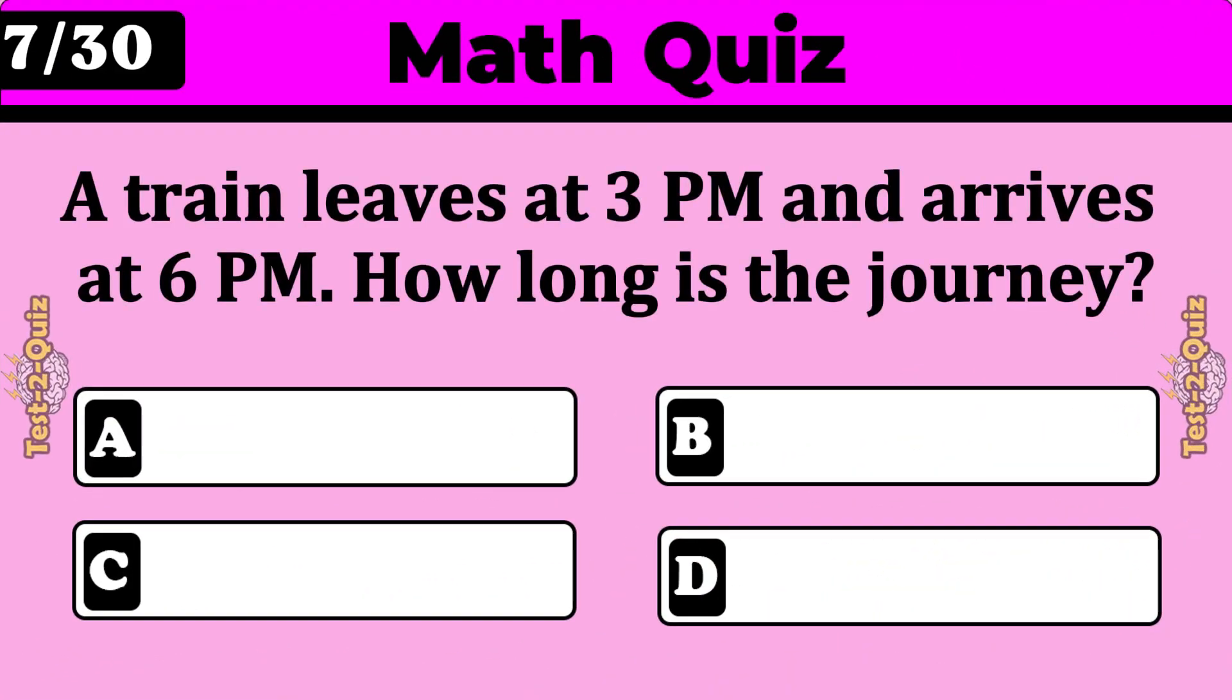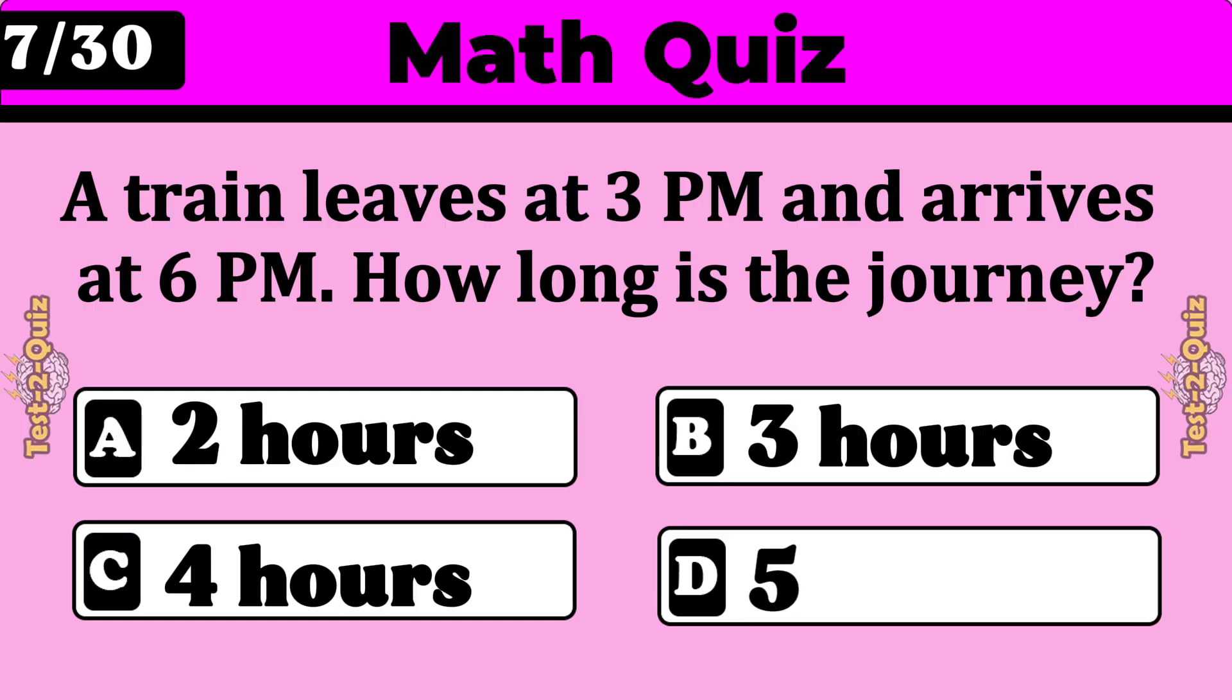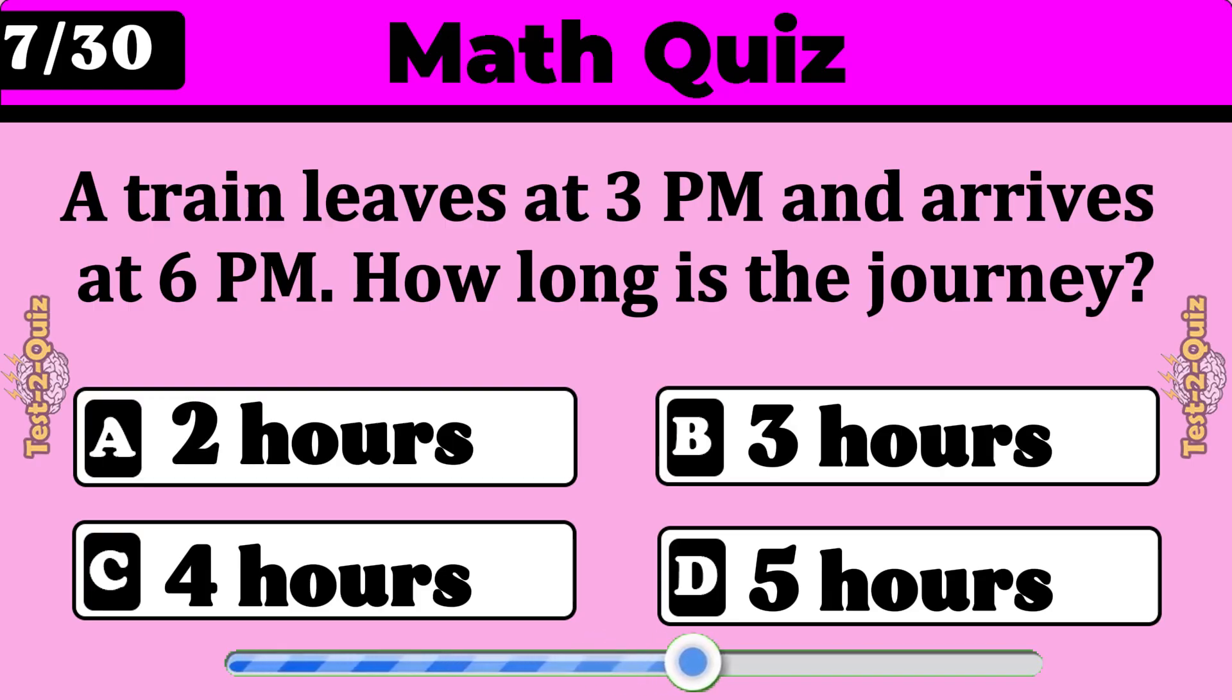A train leaves at 3 p.m. and arrives at 6 p.m. How long is the journey? 3 hours.